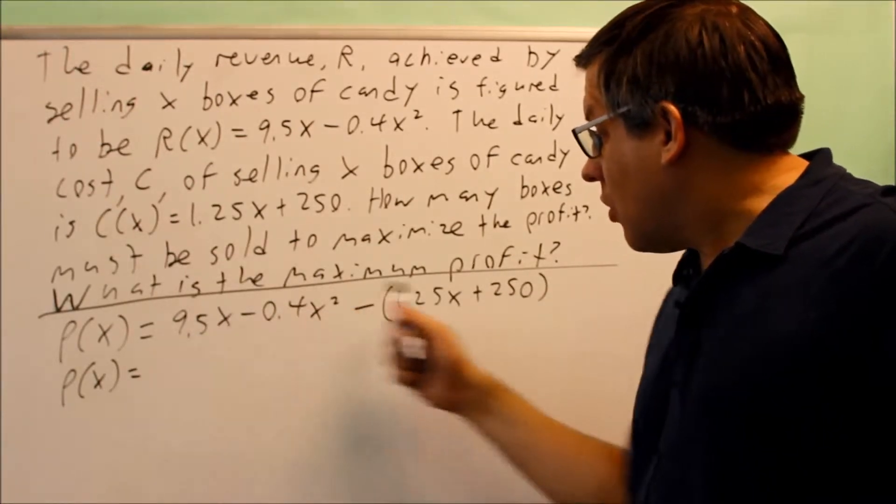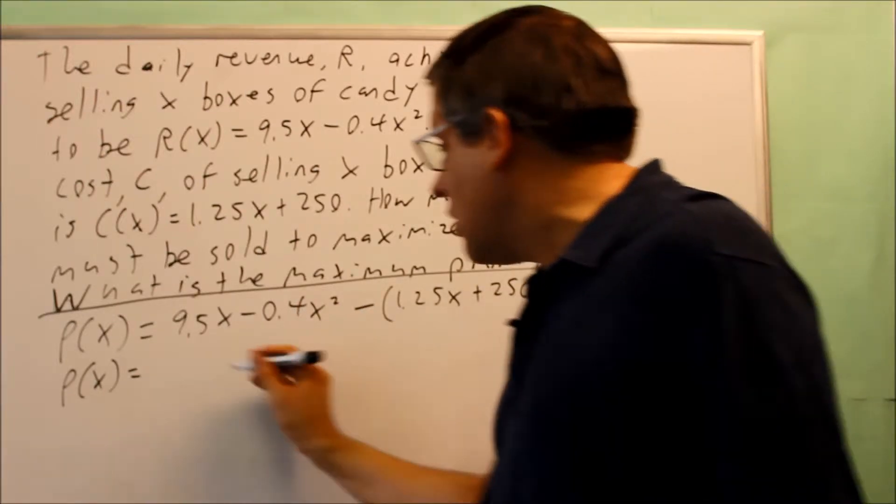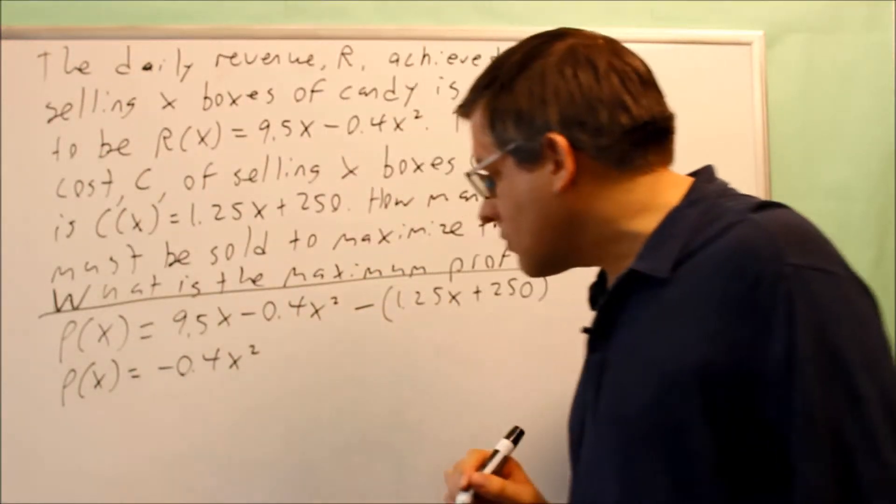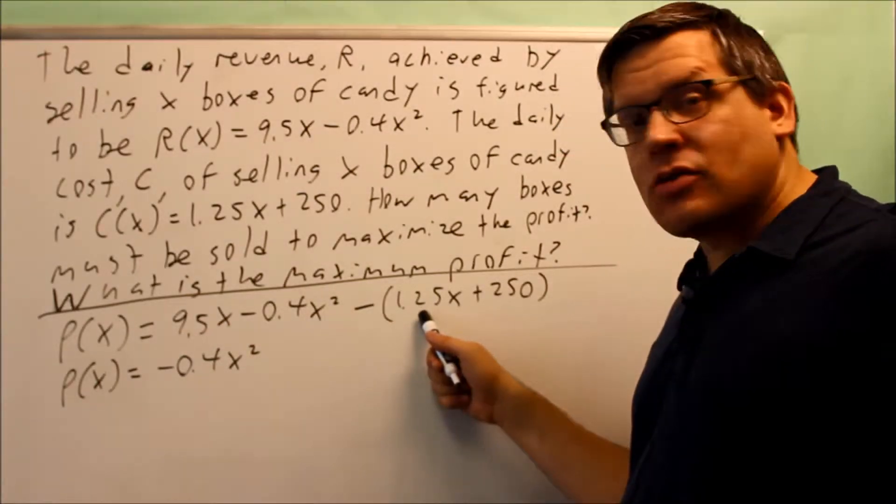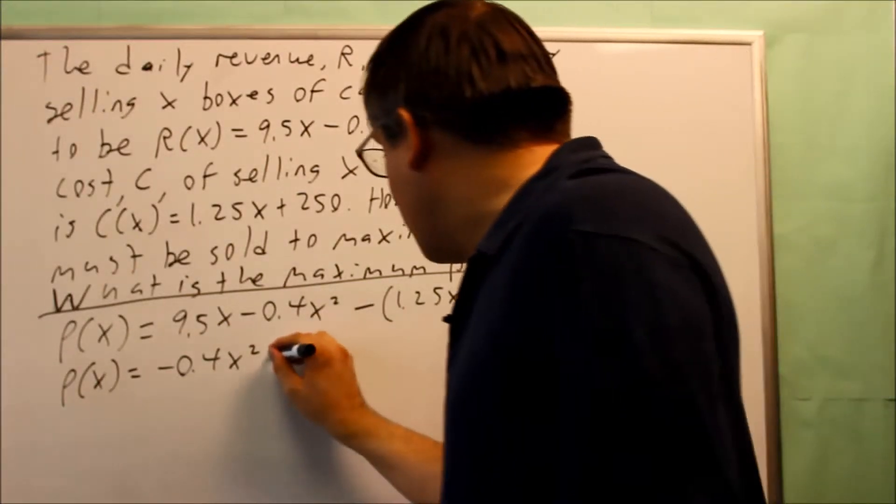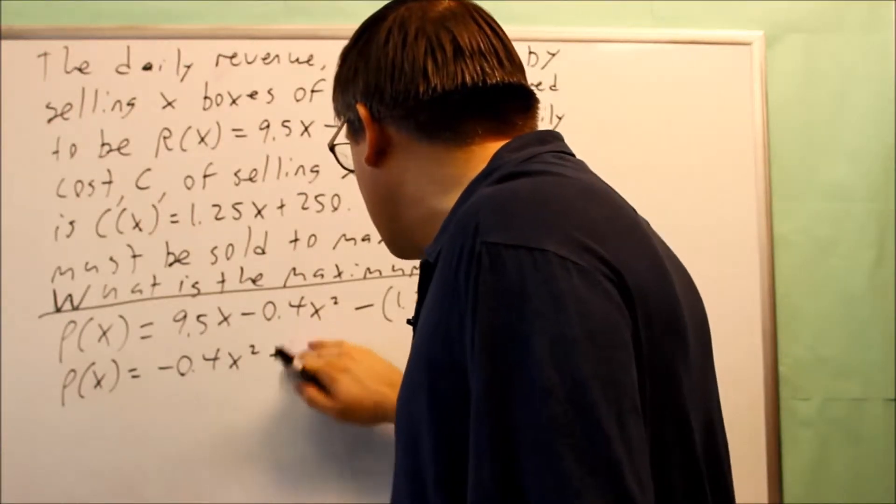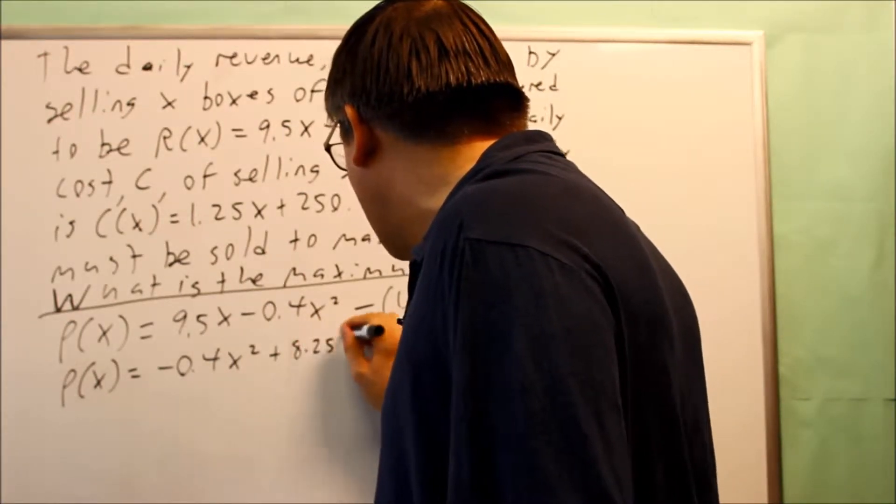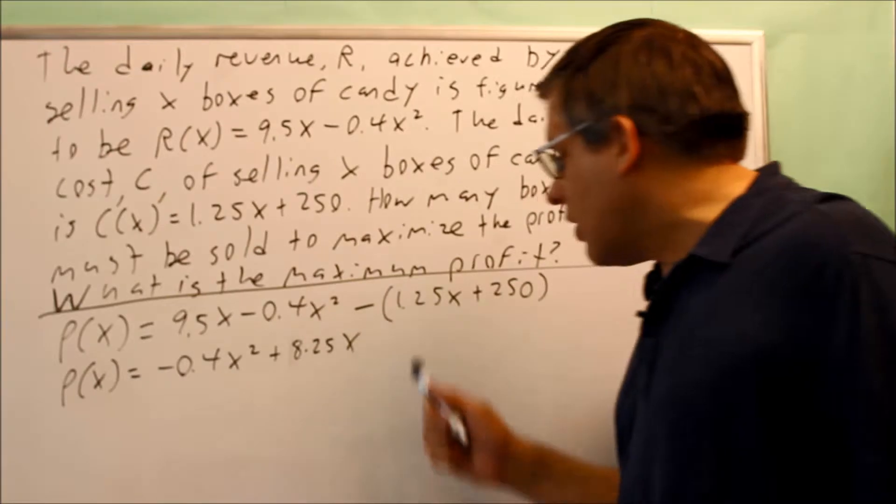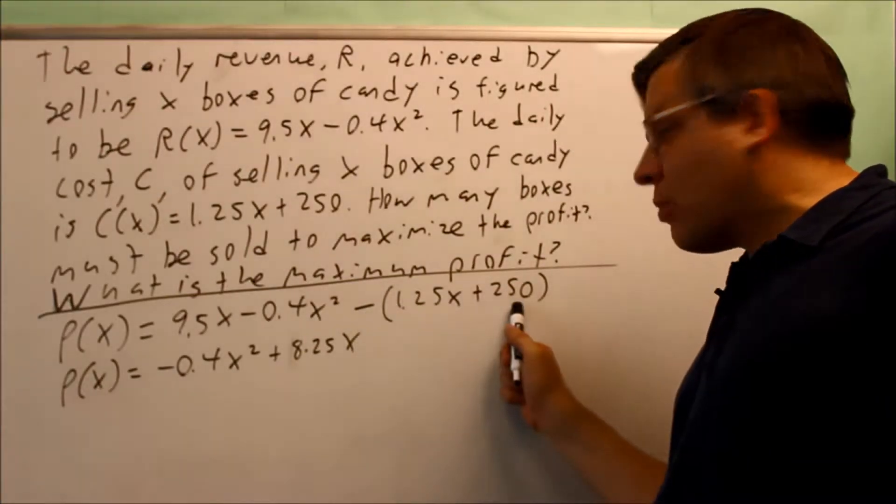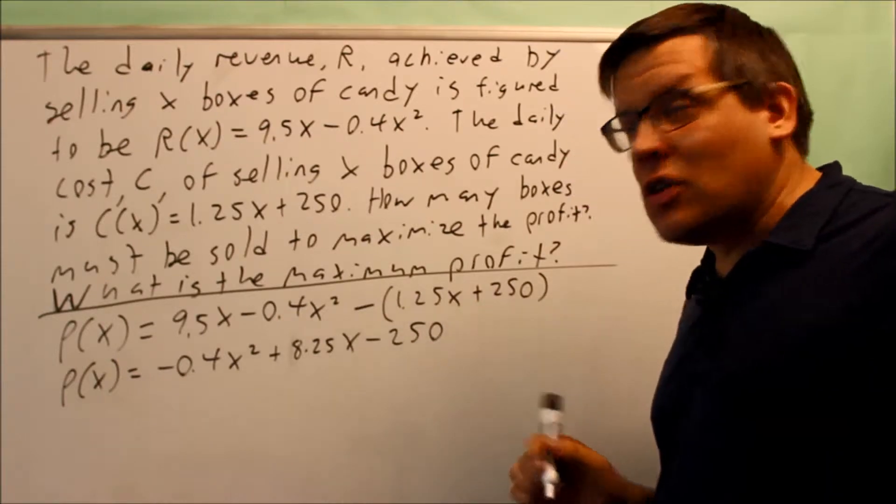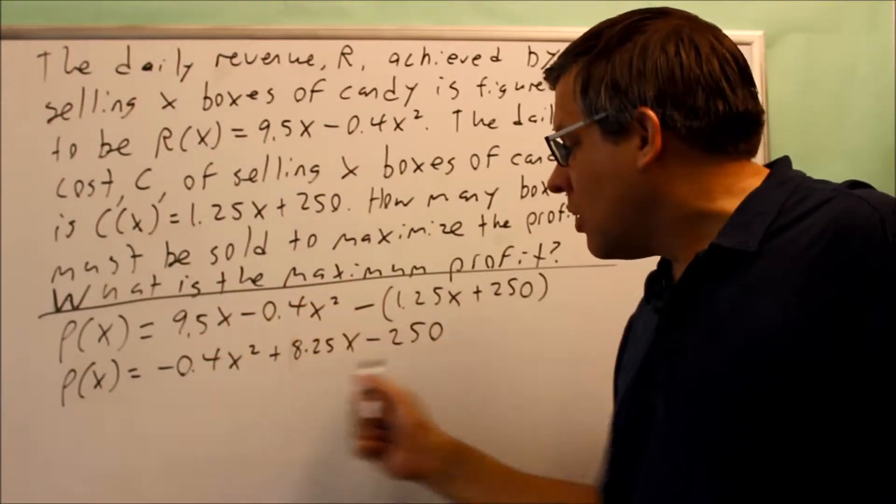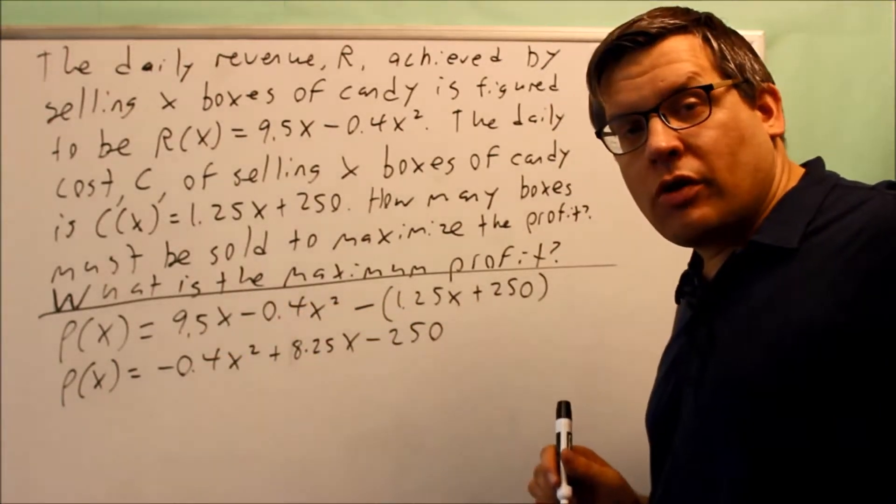Let's simplify this. This is negative 0.4x squared, no like terms there. I have 9.5 minus 1.25, that's 8.25x. And then the negative, don't forget the negative does apply also to the 250, so you're going to get negative 250. This is going to be the quadratic equation that we're going to work with in order to find the maximum profit.